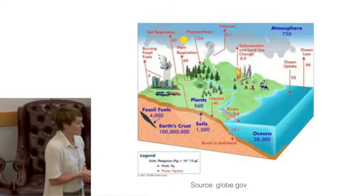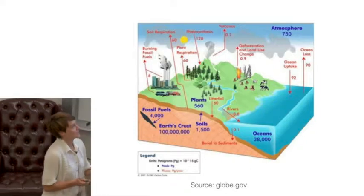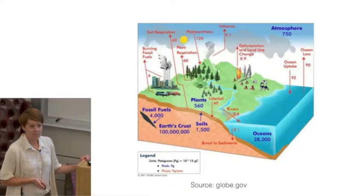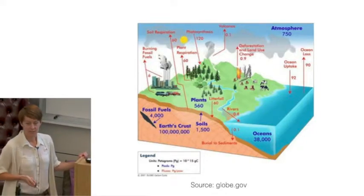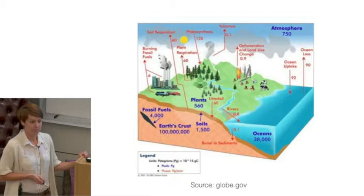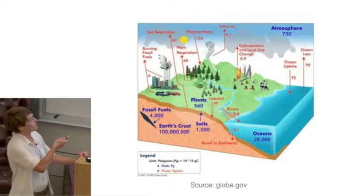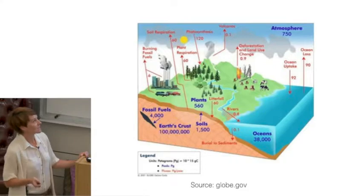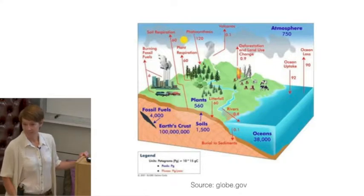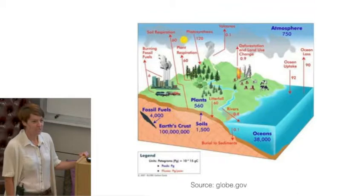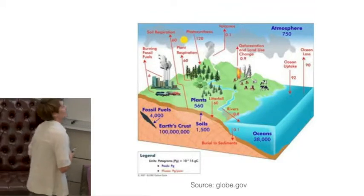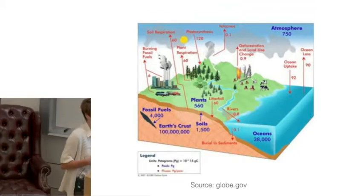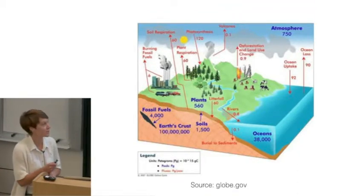Going back to our esteemed congressman's quote: if we sum up all of the gross fluxes of CO2 to the atmosphere, human emissions — about six petagrams per year, roughly seven — is actually only three percent of natural CO2 emissions. So why do we have a problem if human emissions are only three percent of natural? You've probably all taken a finance class and know that it's not the gross that matters, but the net.